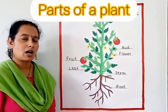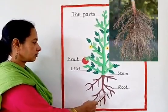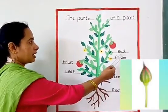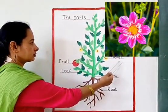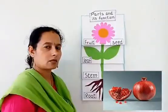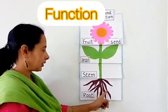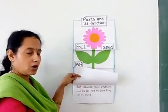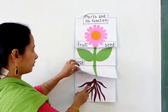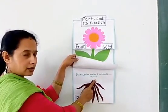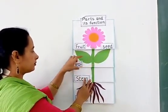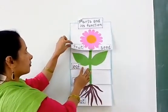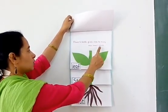Now let us revise the parts of the plant: roots, stem, leaf, bud, flower, fruit. Let us revise the functions. Roots absorb water and nutrients from the soil. The stem holds the plant firmly above the ground and carries water and nutrients through the plant. The leaf cooks food for the plant. The fruit and seed give rise to many new small plants.